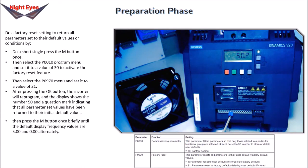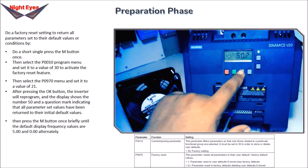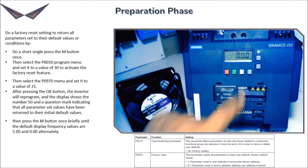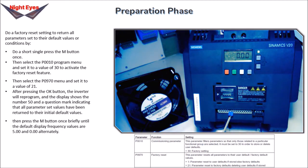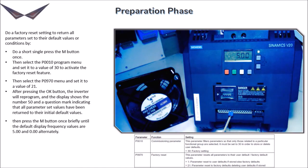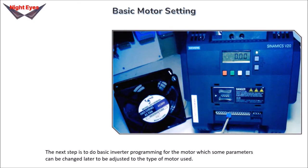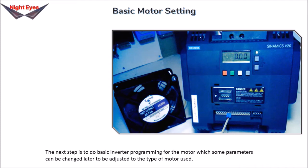Then press the M button once briefly until the default display alternates between frequency values of 5.00 and 0.00. The next step is to do basic inverter programming for the motor, where some parameters can be changed later to be adjusted to the type of motor used.